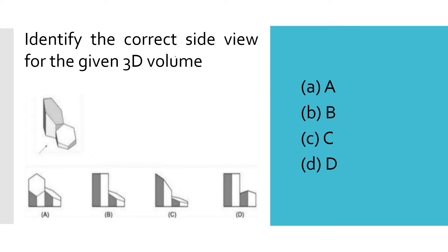Identify the correct side view for the given 3D volume. You are viewing from this side. As you can see, this is the vertical face perpendicular to this direction, so you will see a simple line. You will see these two faces in front of you, which will be something like this, and there will be a section like this.